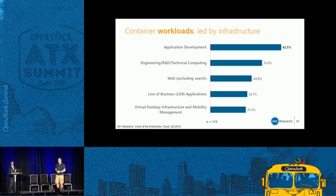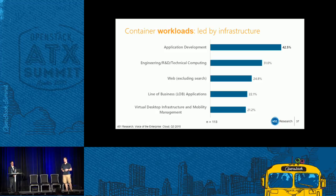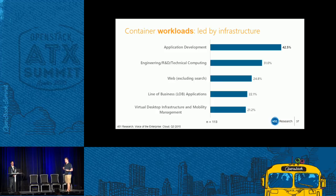In terms of what enterprises are doing with containers, this is probably the most important question. It ties back to OpenStack a few years ago, when people would install a cloud and ask 'now what?' The top five container workloads are mostly infrastructure workloads: application development, technical computing — genomic sequencing is a great use case because it's small things quickly piecing together chunks of DNA, scaling up and down as required — and web servers.